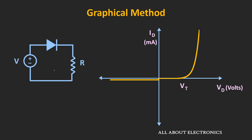So here we have a very simple circuit in which some DC voltage is applied and a current limiting resistor R is connected in series with this diode. Let's assume that the applied voltage is sufficient to forward bias this diode, and that the voltage across the diode is Vd and the current flowing through the circuit is Id. Now if we apply KVL, we can write: V = Vd + Id × R.